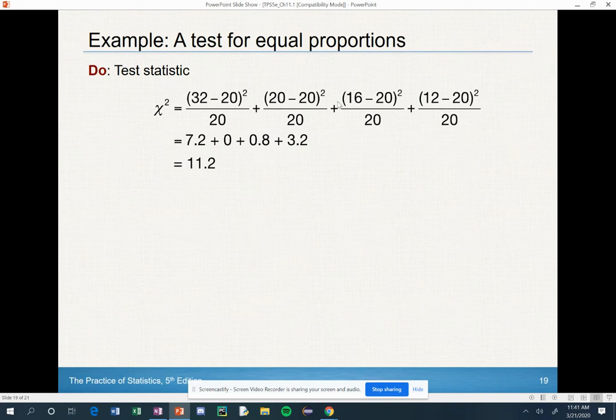You're going to enter in list 1: 32, 20, 16, and 12. Then you're going to enter in list 2: 20, 20, 20, 20. And then you hit stat test, scroll all the way down to chi-squared goodness of fit test.